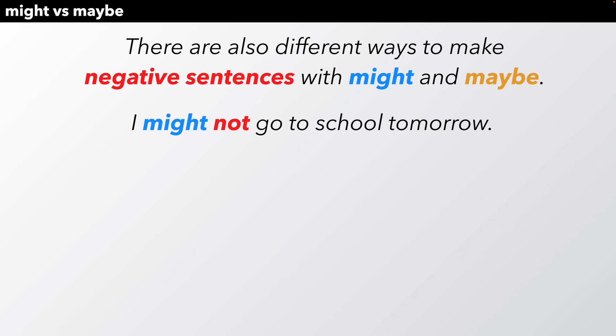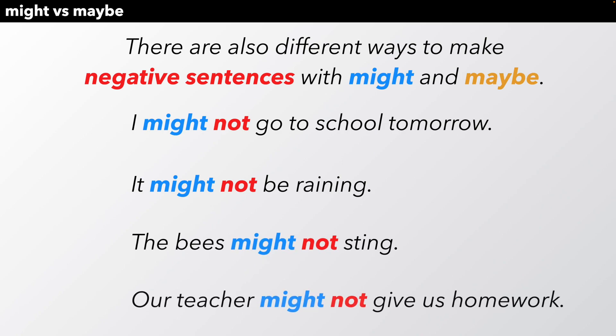This time, the negative part not comes in between the word might and the main verb. Might not go. It might not be raining. The bees might not sting. Our teacher might not give us homework.